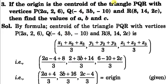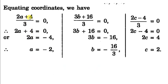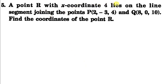Next: if the origin is the centroid of a triangle with vertices P, Q, and R, find the values of a, b, c. Since centroid coordinates are given by (x1+x2+x3)/3, (y1+y2+y3)/3, (z1+z2+z3)/3, we write: (2a - 4 + 8)/3 for x, and similarly for y and z. Since the centroid is at origin (0,0,0), equating each coordinate to 0 gives us the values of a, b, and c.